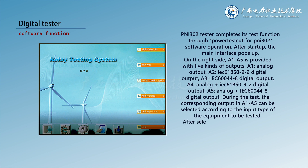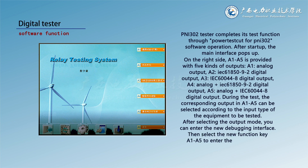After selecting the output mode, you can enter the new debugging interface. Then select the new function key A1 through A5 to enter the corresponding function debugging.